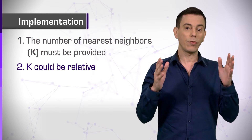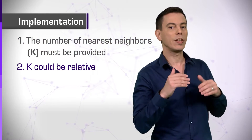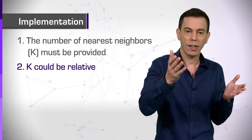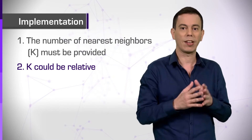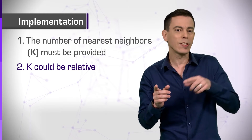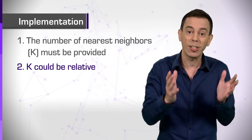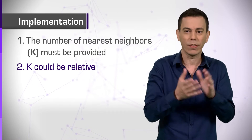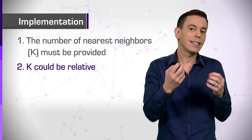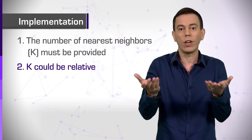K could be relative, meaning we can set it to be a certain percentage of the training set — say 10% of the classified data points — or only those data points that are within a certain distance, a certain radius, and so on. In any case, we still need some sort of a threshold to decide who to learn from.